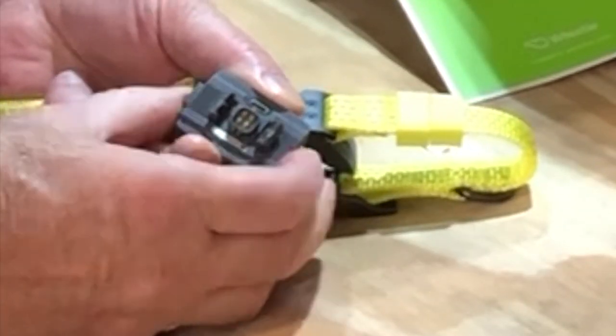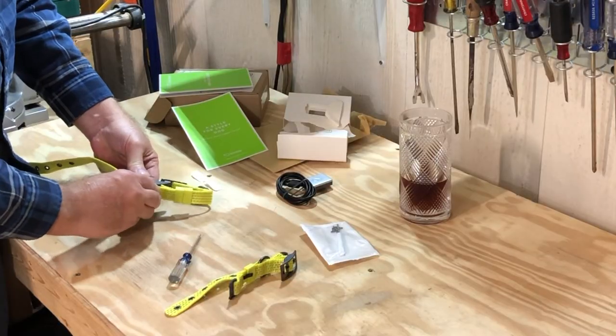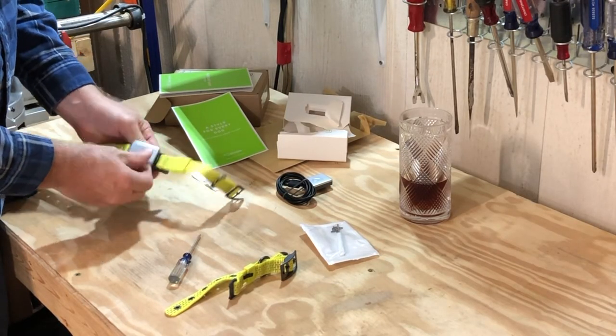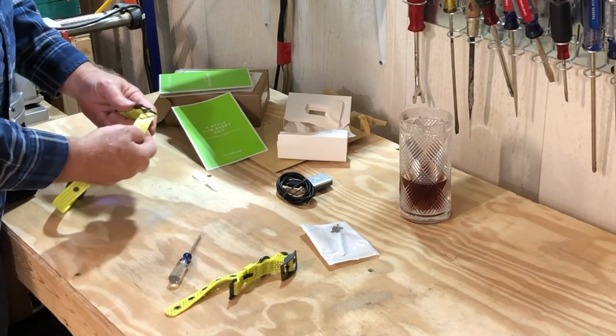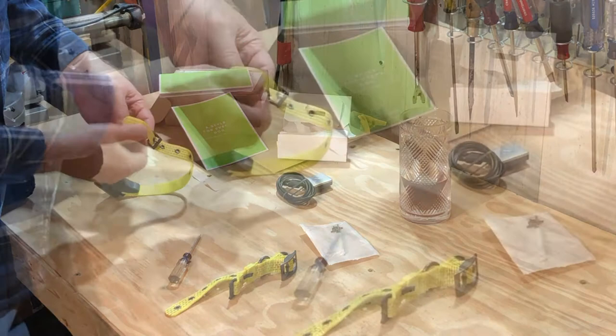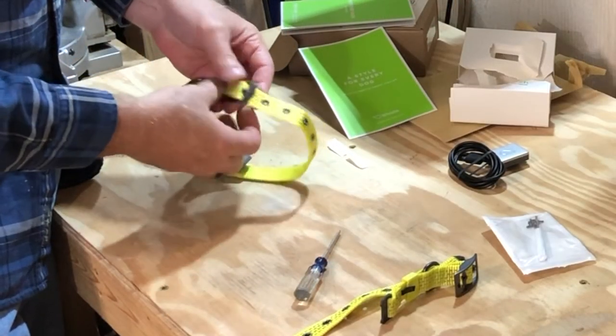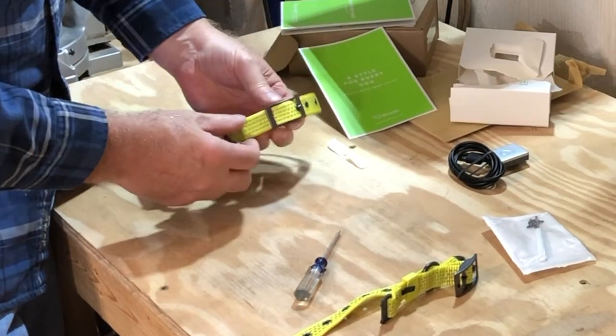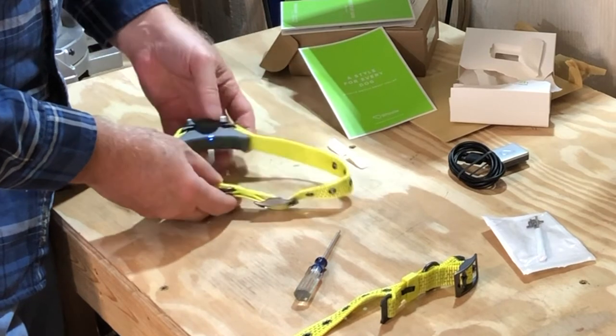Here I'm attaching the battery. With this new one you get two batteries so you can have one battery charging while the other one's on the dog. That's nice. The old one, you had to take the GPS tracker off while it was charging, so there was 10 hours or so where there was no tracking going on.